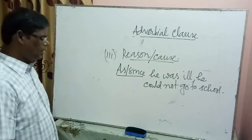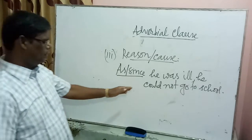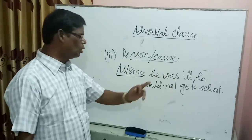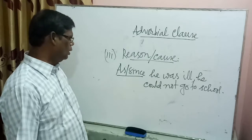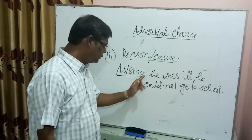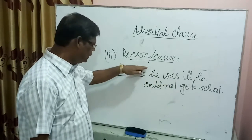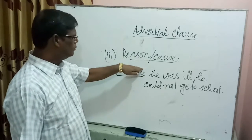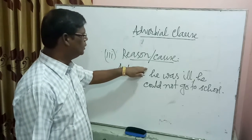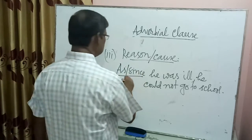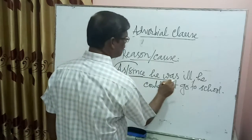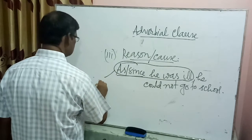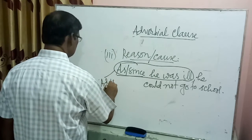For example: 'As he was ill, he could not go to school.' The main clause is 'he could not go to school.' Why could he not go to school? Because — as or since — he was ill. That is the reason. So this clause indicates reason, and it is called an Adverbial Clause of Cause or Reason.